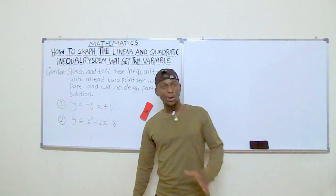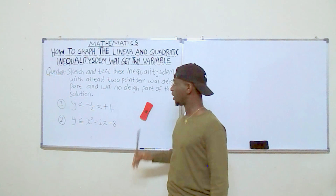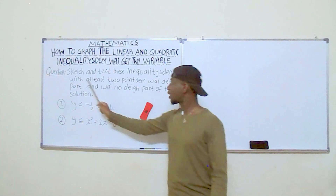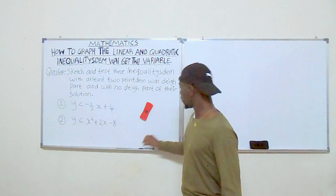Hello and welcome back. For this lesson we will learn how to graph linear and quadratic inequalities with two variables. We will use this question to take on the standard. The question says: sketch and test these inequalities with at least two points, then shade the path of their solution. So first we have y less than negative one-half x plus four.